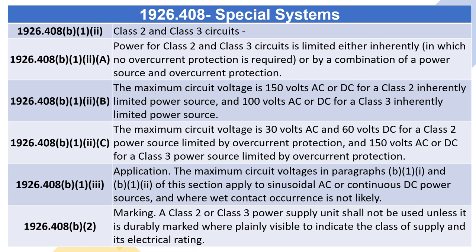1926.408(B)(1)(ii) — Class II and Class III Circuits. (A) Power for Class II and Class III circuits is limited either inherently, in which no overcurrent protection is required, or by a combination of a power source and overcurrent protection. (B) The maximum circuit voltage is 150 volts AC or DC for a Class II inherently limited power source, and 100 volts AC or DC for a Class III inherently limited power source. (C) The maximum circuit voltage is 30 volts AC and 60 volts DC for a Class II power source limited by overcurrent protection, and 150 volts AC or DC for a Class III power source limited by overcurrent protection.